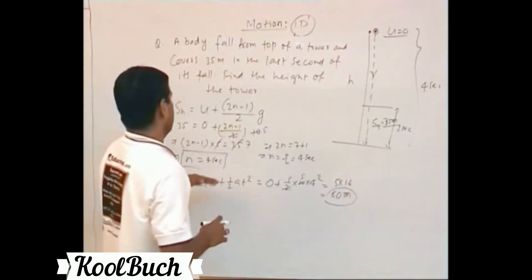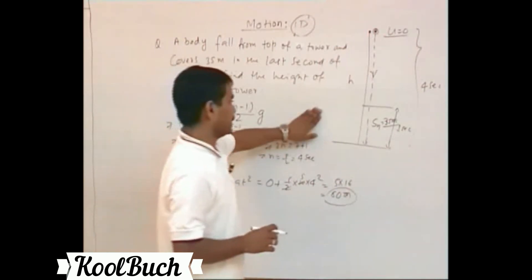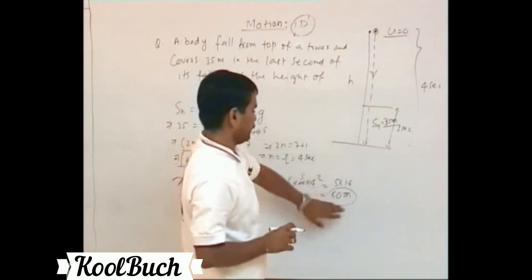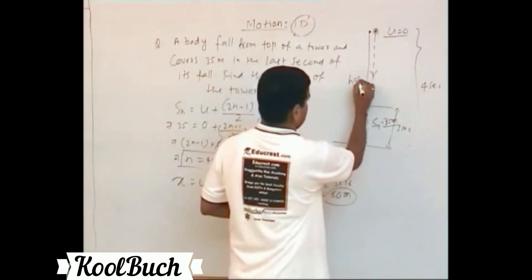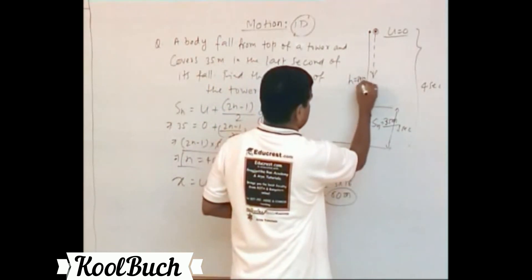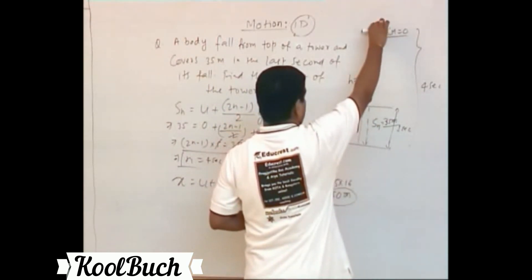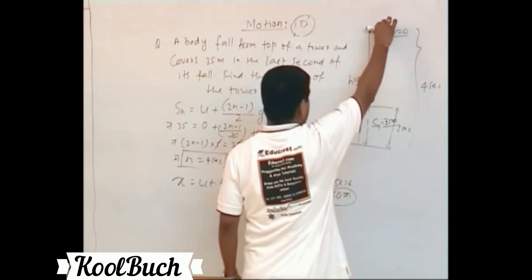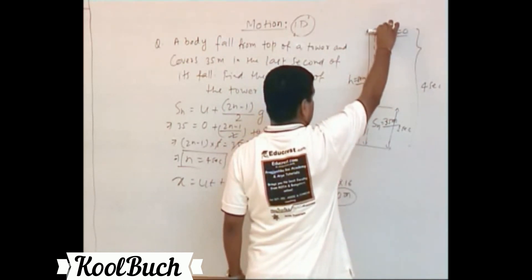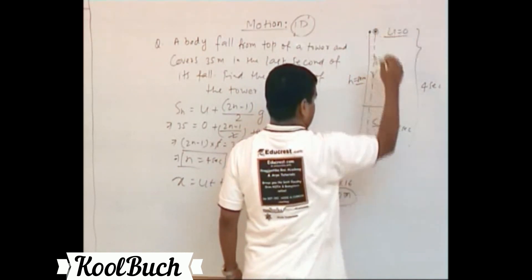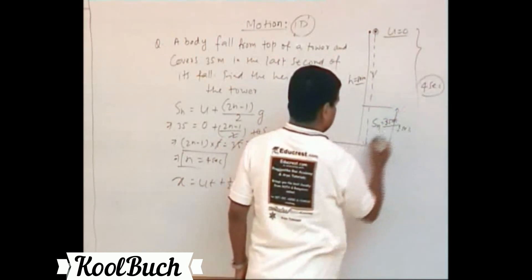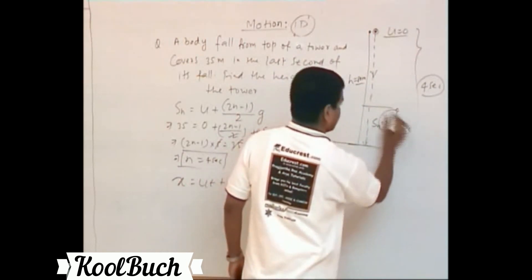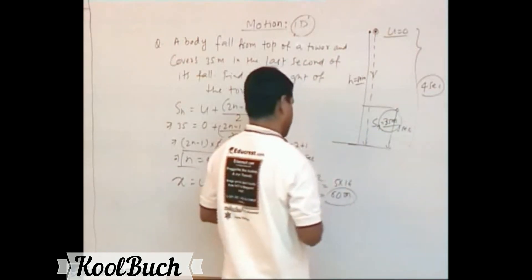We can verify: a tower of height 80 meters, with an object dropped from the top with initial velocity 0, takes 4 seconds to reach the ground and travels 35 meters in the last second of its fall.